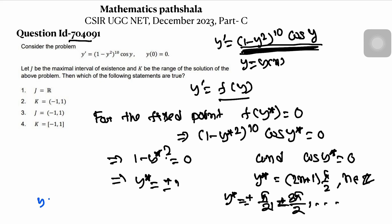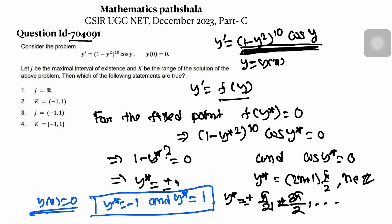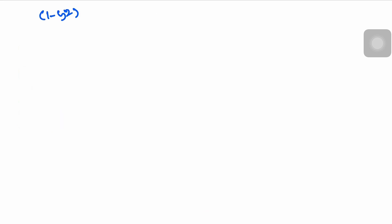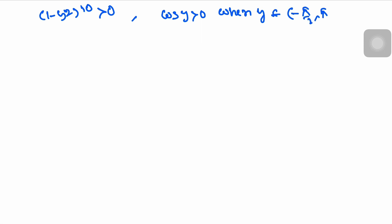Since the initial condition is y(0) = 0, the solution starts between the fixed points y* = -1 and y* = +1. We will discuss the stability of these two fixed points. Now, (1 - y²)^10 is always greater than 0, and cos(y) > 0 when y belongs to (-π/2, π/2). So f(y) > 0 for y in (-π/2, π/2).